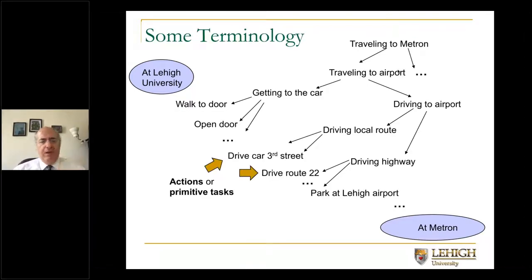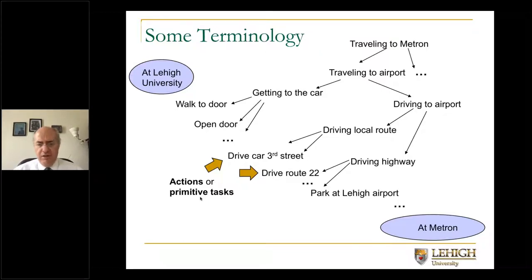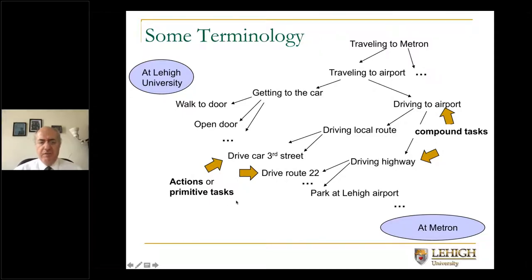Some notation I'll use throughout: the low-level activities are called actions, also called primitive tasks. They are tasks that don't get decomposed — they correspond directly to actions. Then we have compound tasks, which can be decomposed into other tasks. We keep decomposing compound tasks, while primitive tasks mark the end of the decomposition process. This is standard Hierarchical Task Network, or HTN, planning terminology.